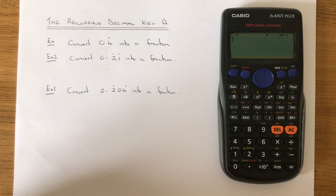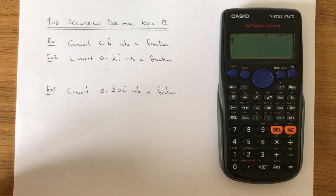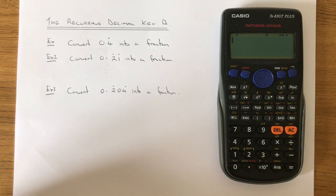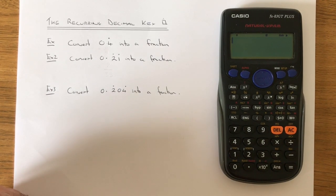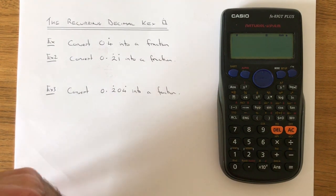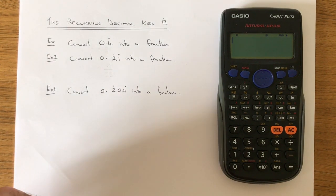Hi, this is Maths3000. Today I'm going to show you how to use the recurring decimal key on a scientific calculator. This is quite useful when you need to convert a recurring decimal into a fraction.